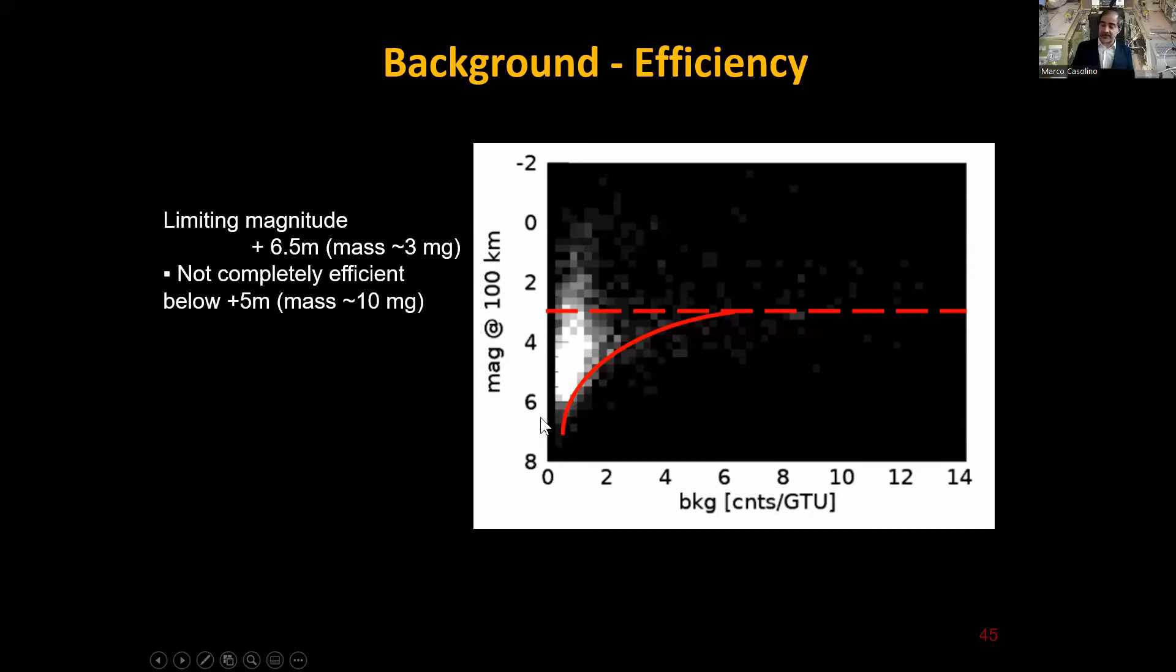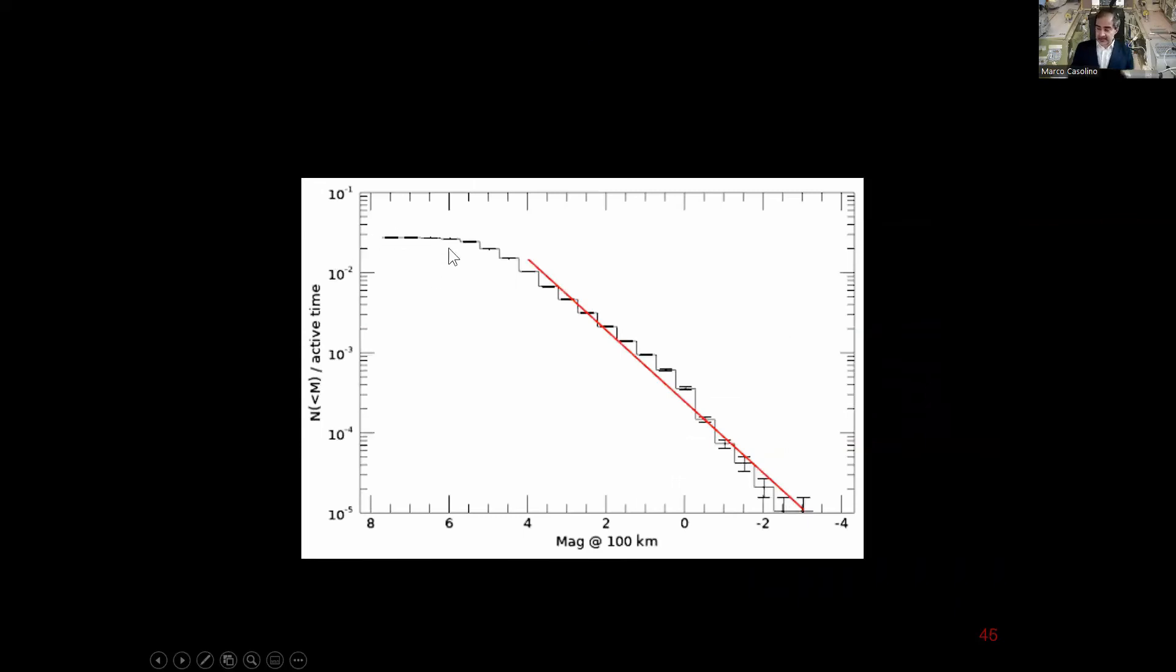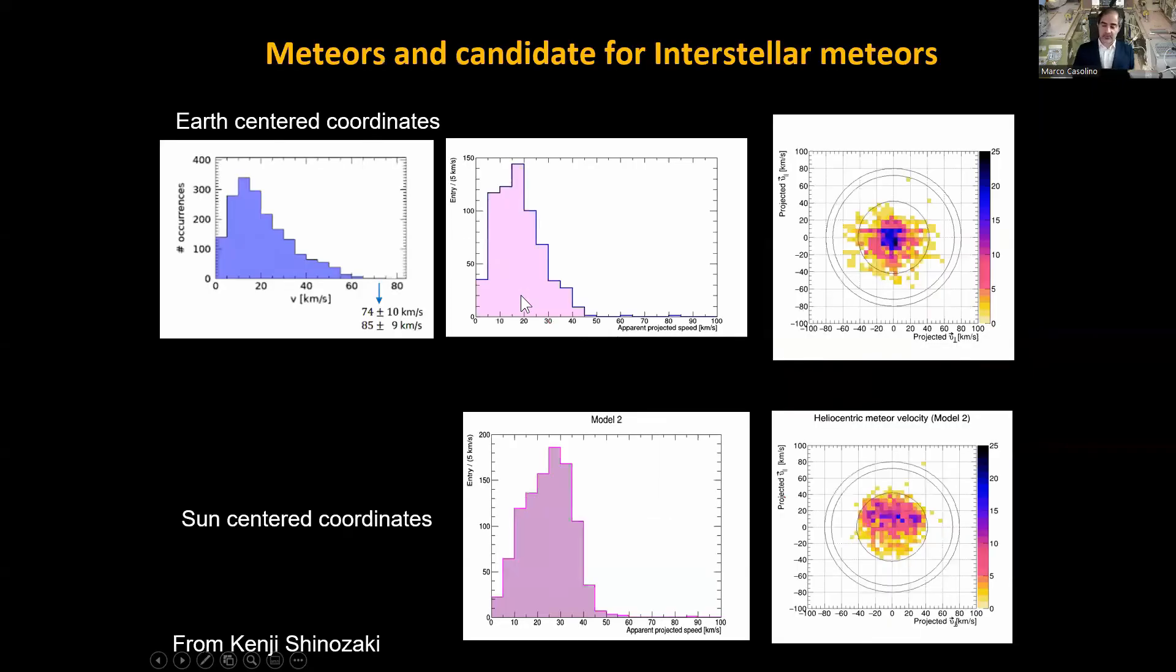The velocity is especially relevant because Kepler dynamics tells us that we don't have meteors above 74 kilometers per second. Above that, they must be of interstellar nature. If you take into account also that less bright meteors with higher magnitude are visible only if there is low background, and brighter meteors are visible even in case of high background, you have to take into account efficiency. You can build these preliminary results. This is the magnitude at 100 kilometers. We are dealing with between a milligram and above in the gram range, and here we are in the milligram range of the meteor size.